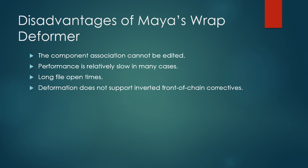Another disadvantage is that Maya's wrap deformer does not support inverted front-of-chain correctives. If you're familiar with my CV shape inverter command, you may have used it to create corrective shapes when you have a skin cluster or some other linear deformation like clusters or blend shapes. That command lets you write front-of-chain corrective shapes that activate before that deformation. Maya's wrap deformer does not support such corrective shapes, but the wrap deformer we'll implement in these videos will — so you'll be able to create your own corrective shapes using our custom wrap deformer.